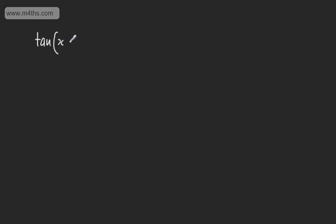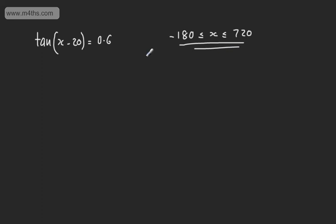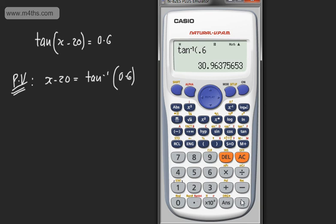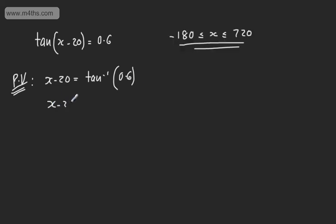Let's look at something slightly different — tan of x minus 20 degrees equal to 0.6, with x between minus 180 and 720. This time we don't have a special angle. So the principal value for x minus 20 is the inverse tan of 0.6. Working in degrees, that gives us 30.96.